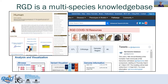Each of these landing pages shows general information about the species and its use in research, and provides links to species-focused data and searches and links to RGD tools with the species already selected where that's an option. We have 10 species — eight that are fully released to RGD and two more that are coming soon.